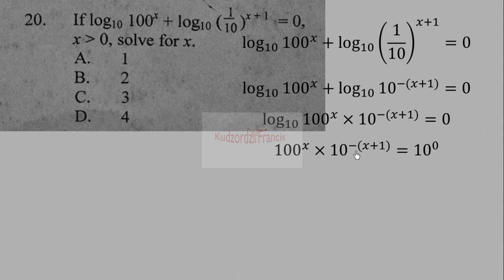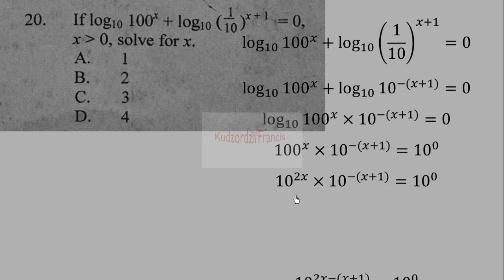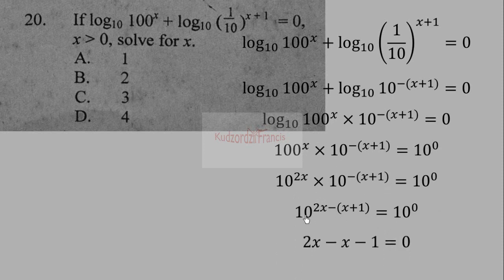We simplify the exponent: 100 = 10², so 100ˣ = 10^(2x). Using the product rule of indices, we add exponents and take the anti-logarithm of both sides. Since the bases are equal, we equate the exponents, giving 2x − x − 1 = 0.